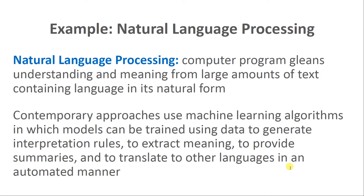As another deep-dive example, let's talk about natural language processing, which can also be used for sentiment analysis. Natural language processing or NLP is really when we use a computer program that gleans understanding and semantic meaning from large amounts of text containing language in its natural form. Instead of distilling things down to the word level, natural language processing takes into context the syntax, the structure, and in that way more of the context surrounding words. You're more likely, depending on how good your algorithm is, to get more accurate extractions of meaning and sentiment when using NLP compared to a lexicon-based approach. Contemporary approaches tend to use machine learning algorithms in which models can be trained using data to generate interpretation rules, extract meaning, provide summaries of the text, and even translate text into other languages in some automated manner.